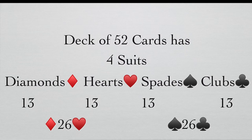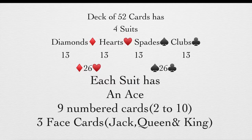There will be 26 red colored cards and 26 black colored cards. The red cards are diamonds and hearts, and the black cards are spades and clubs. Each suit has 13 cards, with one ace and nine numbered cards.